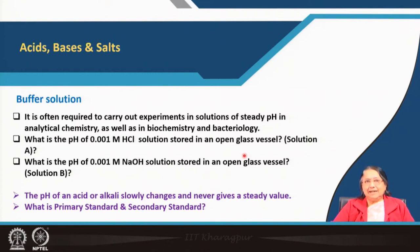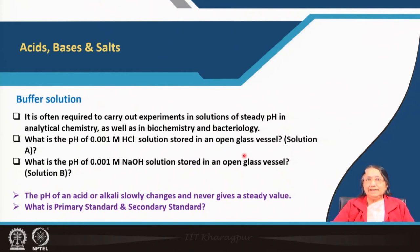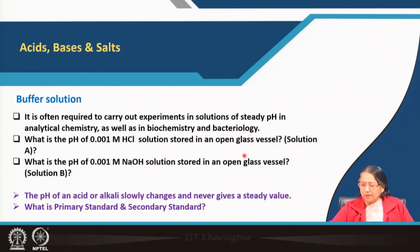That is why HCl and NaOH are not primary standards. A primary standard is something we can weigh accurately, which is not hygroscopic, and whose solution can be stored for a long period without change in strength. For a secondary standard, strength may change with time. So HCl and NaOH in glass vessels are not primary standards because their pH changes.